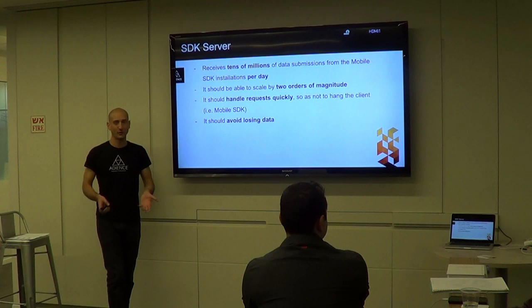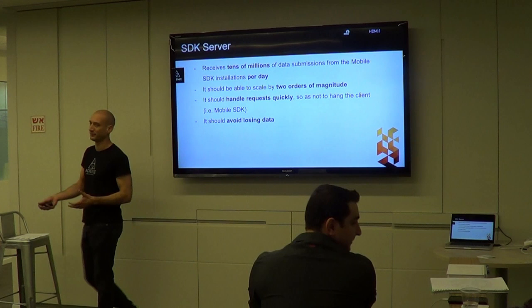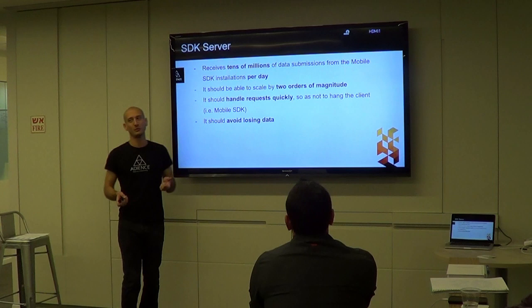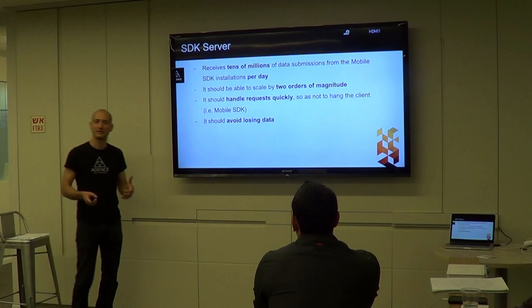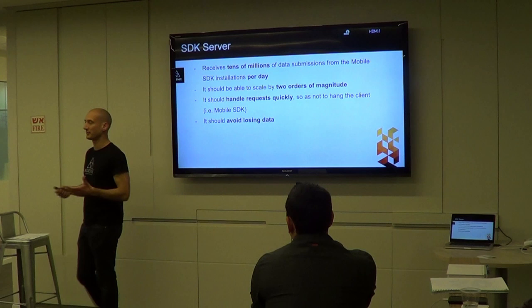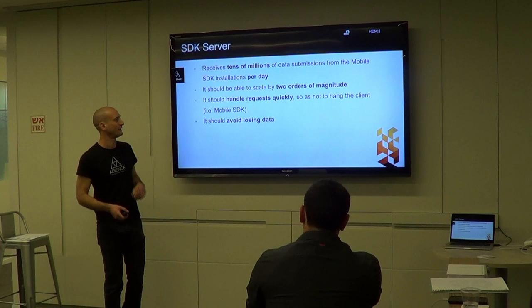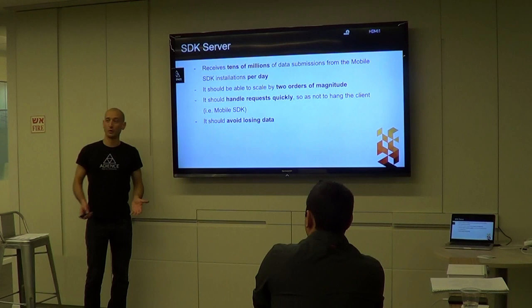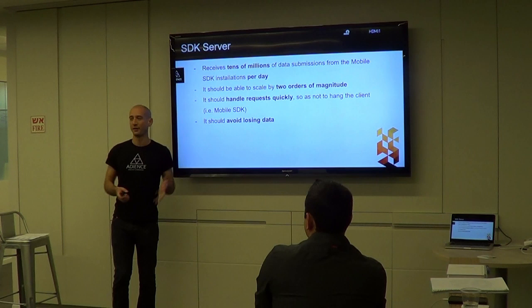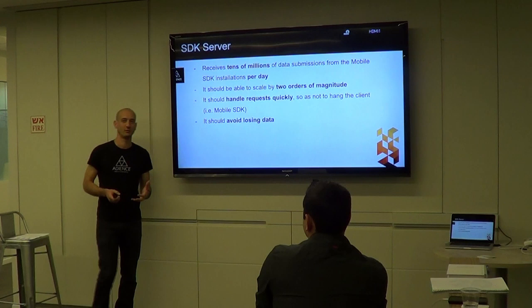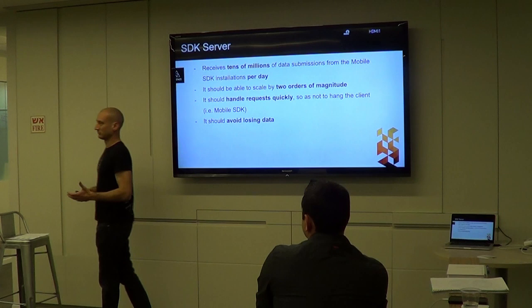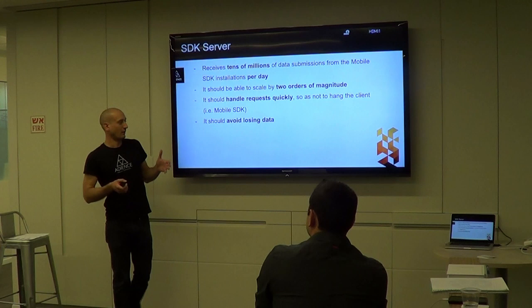We want it to handle requests quickly. If it receives a request from a mobile device that a user is currently using, any hanging or delay in returning the response might affect the user. We don't want to harm the CPU or create too much latency on the network. Avoiding data loss is important but secondary - we'd rather lose data than harm the user's experience.